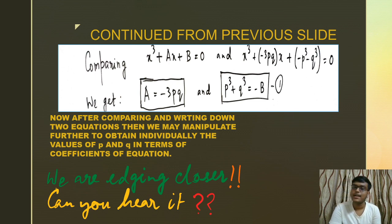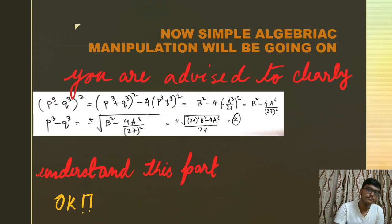Simple algebraic manipulation will be going on. You are advised to clearly understand this part: (p³ - q³)² = (p³ + q³)² - 4p³q³. This is the identity (a - b)² = (a + b)² - 4ab that you have learned in class 8. Then it takes us - pause the video again, see this result.